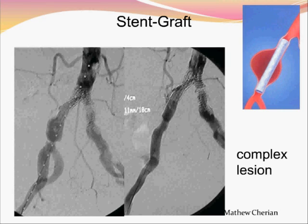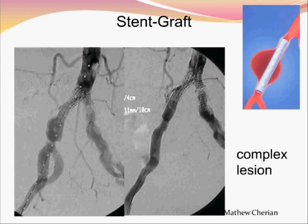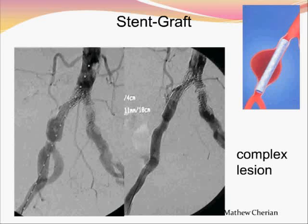Do we have any role for stent grafts in chronic occlusions? We do not routinely use stent grafts for occlusions because if the lesion is a little long, we can end up losing the internal iliac artery. If stent grafts are used on both sides with overlap, we tend to produce stenosis on the opposite side. So we would reserve stent grafts only for aneurysms.